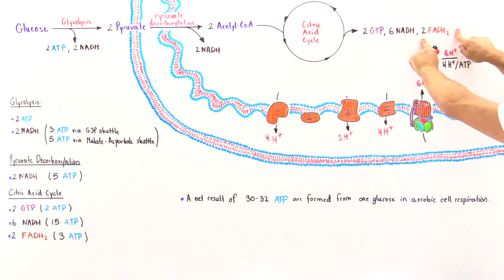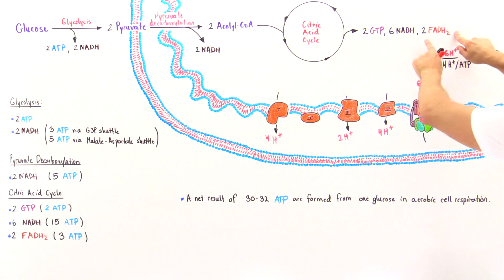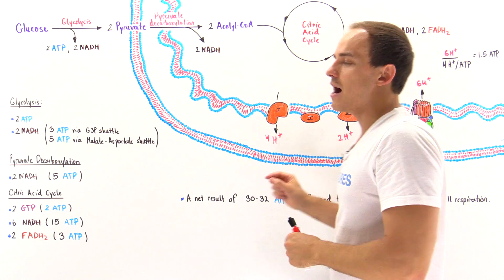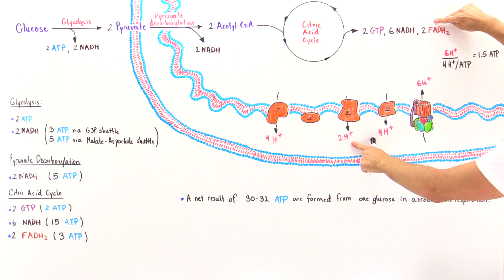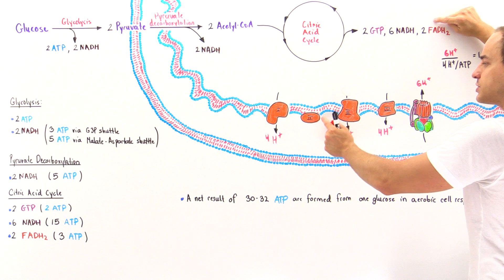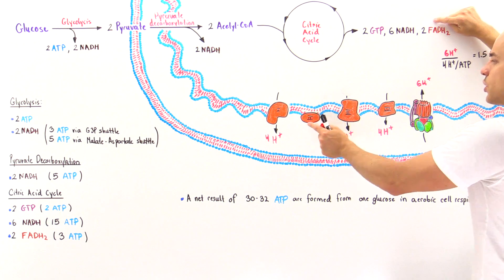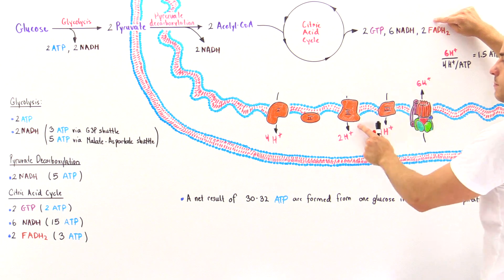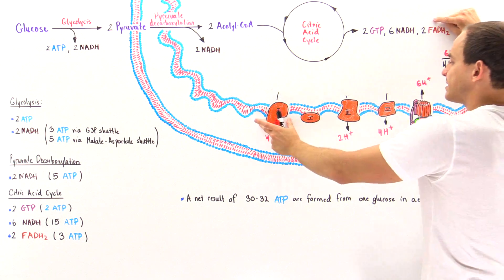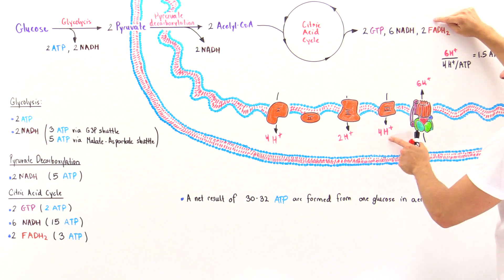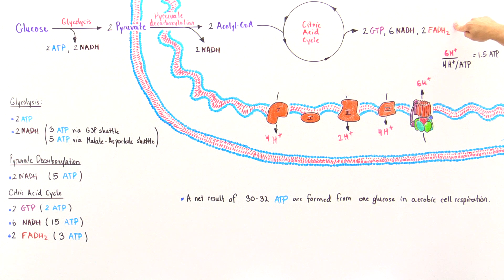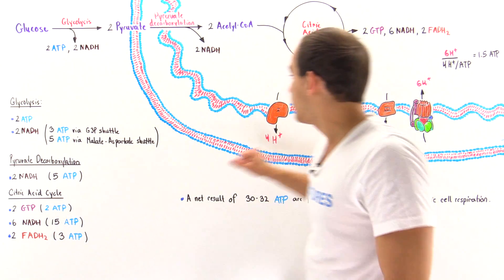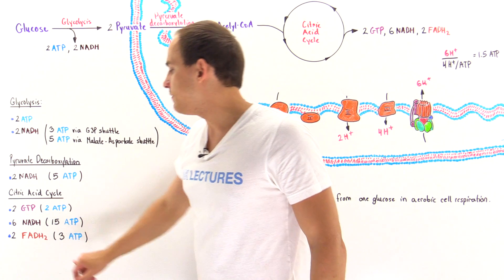When a single FADH₂ is oxidized by the electron transport chain, it is oxidized by complex 2, bypassing complex 1. Complex 2 does not pump any protons, so the electrons from FADH₂ are transported directly onto complex 3. This results in 6 protons total being pumped, and 6 ÷ 4 = 1.5 ATP per FADH₂. With 2 FADH₂ molecules, 2 × 1.5 = 3 ATP are produced.